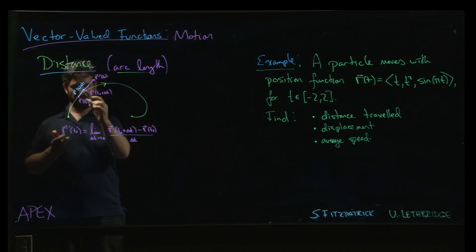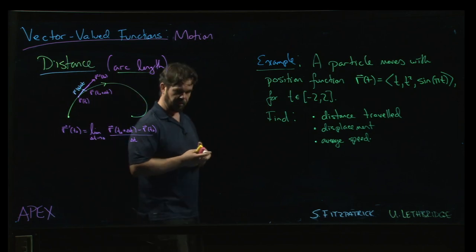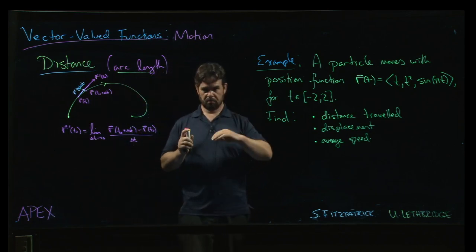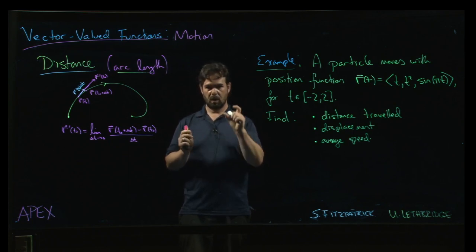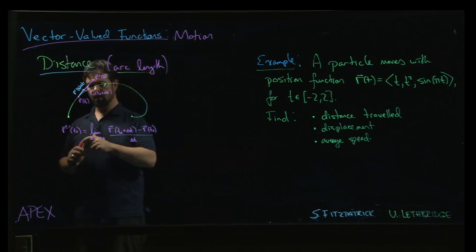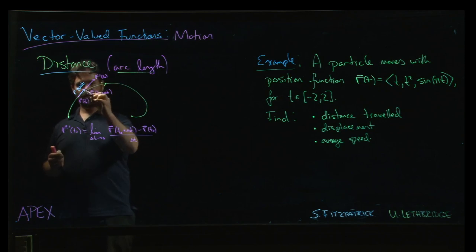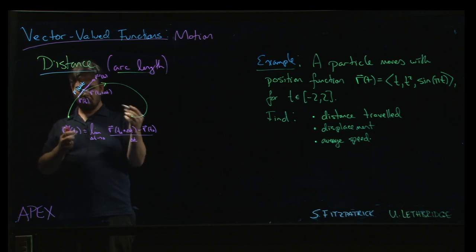The distance traveled, again, if delta t is small enough, well there's not a lot of room for the curve to bend over a sufficiently small interval. And so you have a piece which is approximately straight. And you can see here the length of this segment of the curve. It's going to be pretty close to the magnitude of that vector.